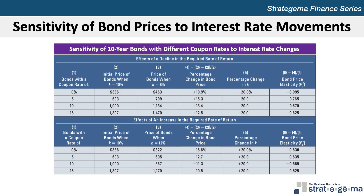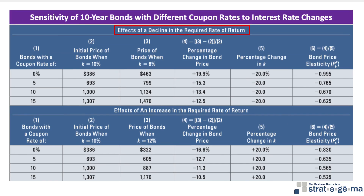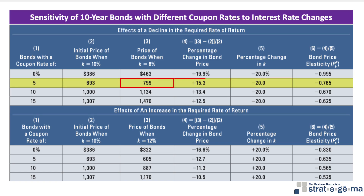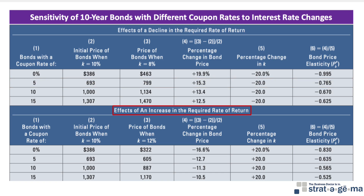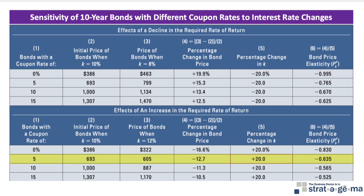This exhibit compares the price sensitivity of 10-year bonds with a $1,000 par value and four different coupon rates: 0, 5, 10, and 15%. Focusing on the top half of the table, which looks at the effects of decreasing the required rate of return, a $1,000 bond with a 5% coupon and 10% yield to maturity will sell for $693. When the yield drops to 8% — a change of minus 20% — the bond will sell for $799, a 15.3% increase. Thus, the bond price elasticity is 15.3 divided by negative 20, or negative 0.765. The bottom half considers the effects of increasing the rate of return. The same 5% coupon bond at a yield of 10% will sell for $605, or 12.7% lower, when the yield increases to 12% — a plus 20% change. The bond elasticity is then negative 12.7 divided by 20, or negative 0.635.